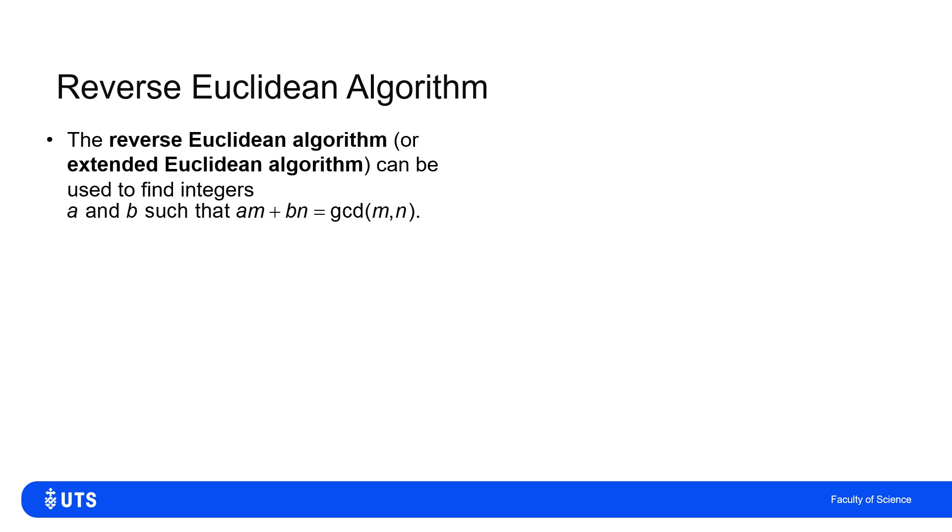This is sometimes called the reverse Euclidean algorithm because you literally reverse the steps, or sometimes the extended Euclidean algorithm. That's finding integers a and b such that a lots of m plus b lots of n will sum to give the greatest common divisor of m and n.